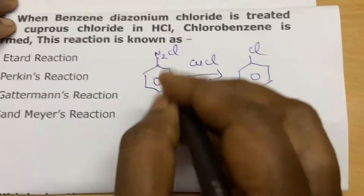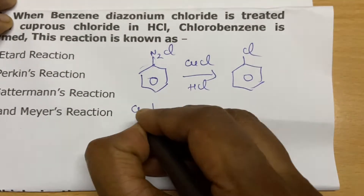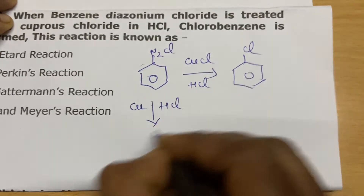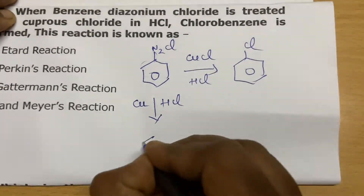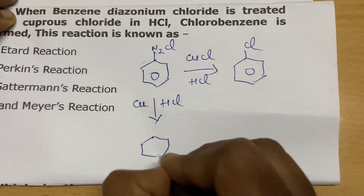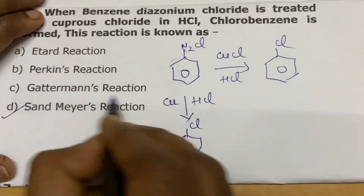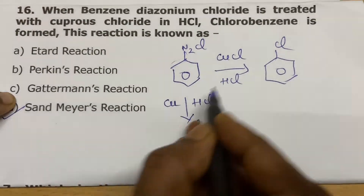One important point: if you use copper powder and HCl instead, it is Gatterman's reaction. You will get the same product, but that naming reaction is known as Gatterman's reaction.